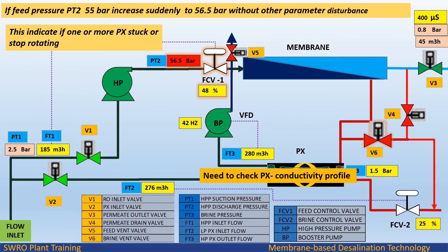During normal plant operation, if feed pressure PT2 at 55 bar increases suddenly to 56.5 bar — about 1.0 to 1.5 bar — without any other parameter disturbance, this indicates that one or more PX units are stuck or have stopped rotating.